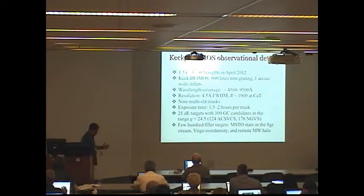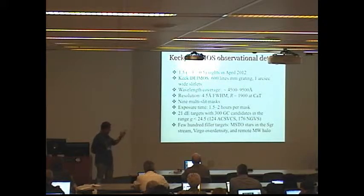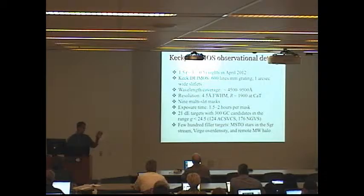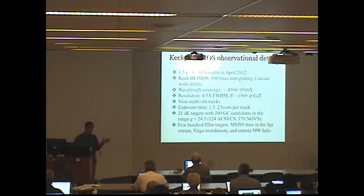We targeted 21 dwarf elliptical galaxies. So you can see that our masks had two or three DEs on them, each mask two or three DEs on them. They were chosen so that they could fit two or three dwarf ellipticals per mask. There were about 300 globular cluster candidates on these masks going quite faint down to G magnitude of 24.5. Some of them selected from Hubble Space Telescope Survey, ACS Virgo Cluster Survey.